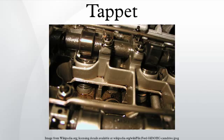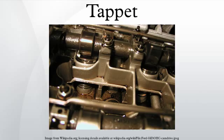Side valve engines also required their tappets adjusting, and in this case it was the tappets themselves that were adjusted directly. Small access plates were provided on the sides of the cylinder block, giving access to the gap between the valves and tappets. Some tappets had a threaded adjuster, but simpler engines could be adjusted by grinding down the ends of the valve stem directly.